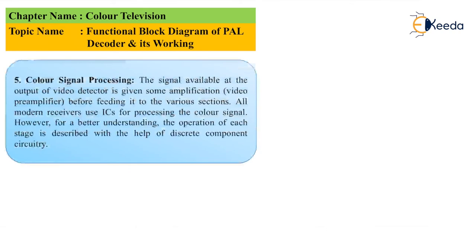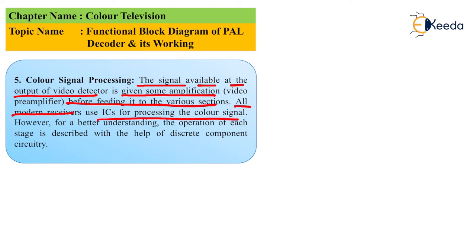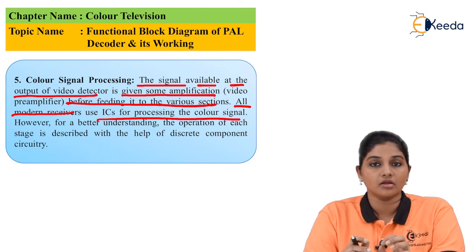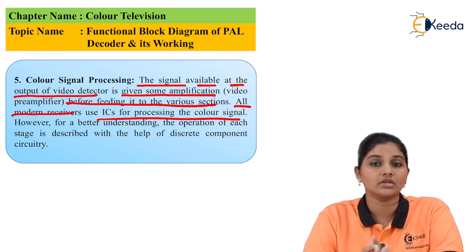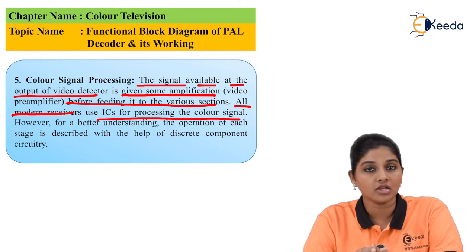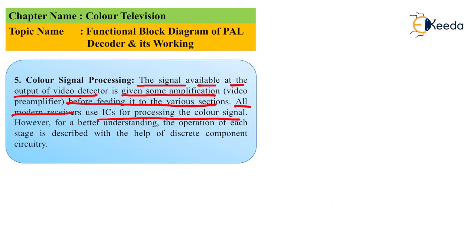The next stage is color signal processing. The signal at the output of the video detector is given for amplification to increase its strength for driving further system stages. Before feeding it to various sections, all modern TV receivers use an IC for processing color. Instead of implementing the circuit on a PCB, it is more convenient to use integrated circuits because they occupy less space, have lower cost, and allow easy replacement. For better understanding, the operation of each stage is described using discrete components, with each block showing its output waveform.